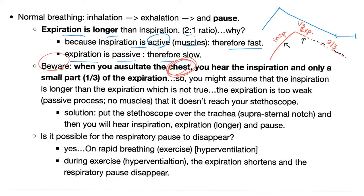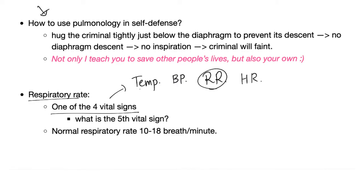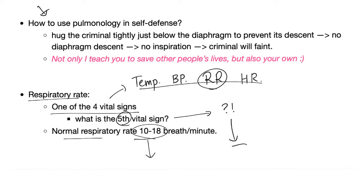The respiratory pause between breaths can disappear during rapid breathing or exercise. Respiratory rate is one of the four vital signs: temperature, blood pressure, respiratory rate, and heart rate. Normal respiratory rate is 10–18 breaths per minute; clinically, 20 is considered hyperventilation by most pulmonologists.